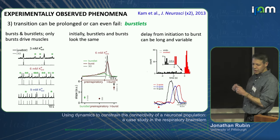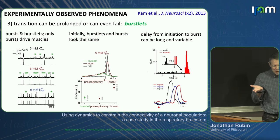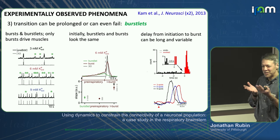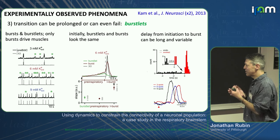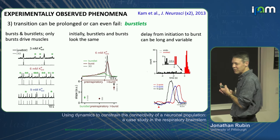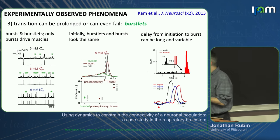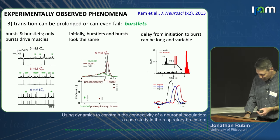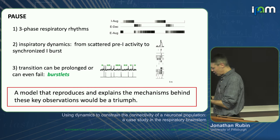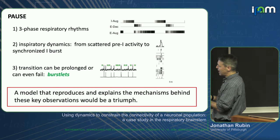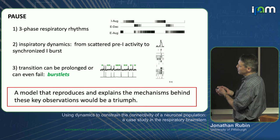They also showed that if a burst had just happened and they tried to initiate a subsequent burst by uncaging glutamate near just a few neurons, depending on the delay since the last burst and the number of uncaging spots — that is, the number of neurons excited — they could get either a failure or a success of evoking a burst with various delays. This is a clue about properties of this circuit.